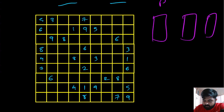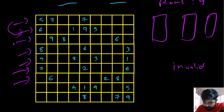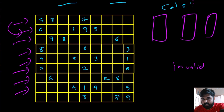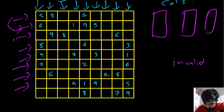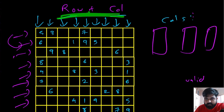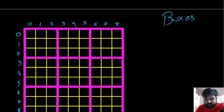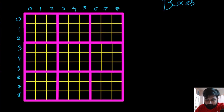To combine all three checks, for rows we create nine hash sets — checking each row for duplicated entries, returning invalid immediately if found, otherwise moving on. The same approach applies to columns — nine hash sets, repeating the same process. If no duplicates are found for either rows or columns, we return valid. But we also need to handle the boxes, and there is one tricky part involved in identifying the correct box.